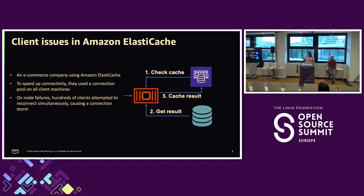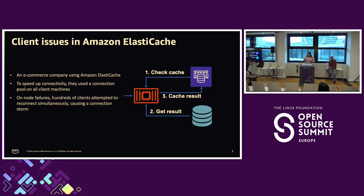I'll explain what Valkey is and how it relates to Redis in more detail. If you've never heard much about AWS, we love to talk about customer stories. I'm going to start by talking about what customer problem led us to build our own clients. Me and Miki work on a service called Amazon ElastiCache, which is the managed caching service within AWS. We have different flavors of databases, one of which is Redis open source.